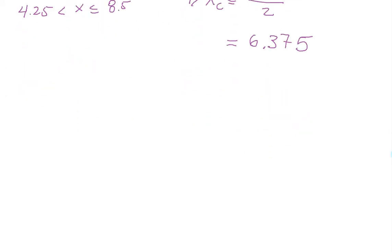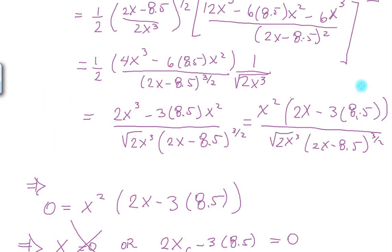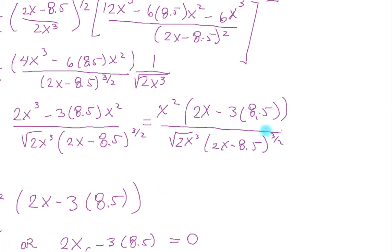So let's draw a diagram again. C prime. Let's put a straight line. We put 4.25, we put 6.375, and we put 8.5. Now, what was the derivative equal to? This whole thing. Let's not worry about the bottom, because it's always going to be positive because of how we restricted our domain.